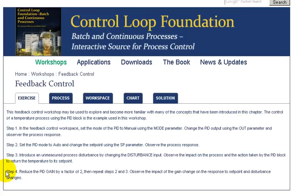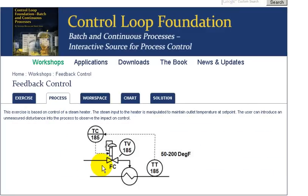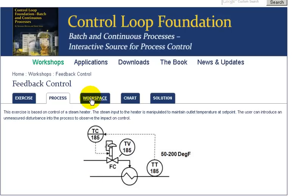The process we will be using is a steam heater in which steam is regulated to a heater. The fluid being heated goes through an inner shell, the outlet temperature is measured, and the PID is used to automatically regulate the steam flow valve. The inlet temperature of the liquid being heated acts as a disturbance to the process.